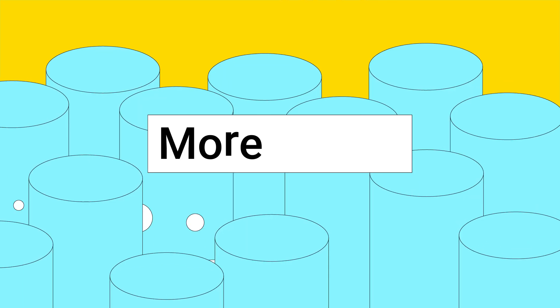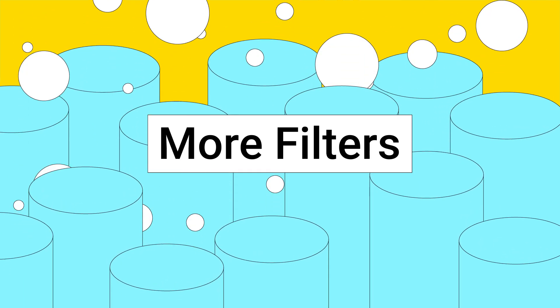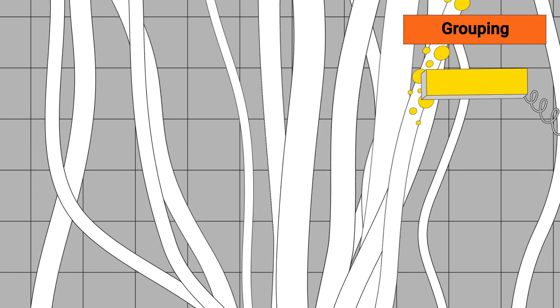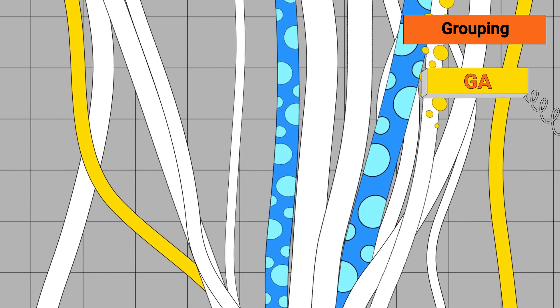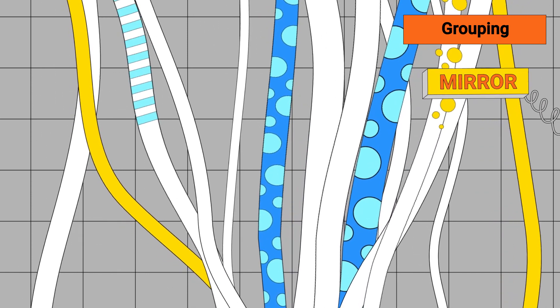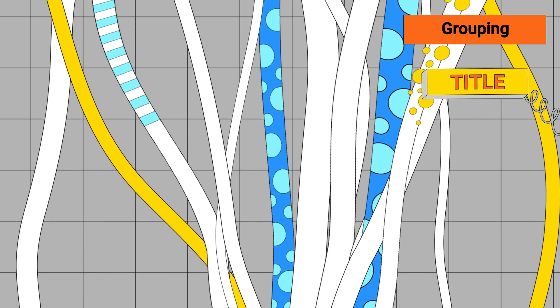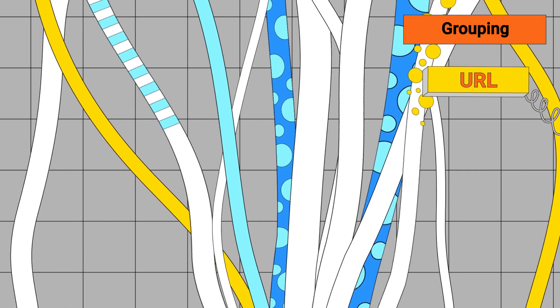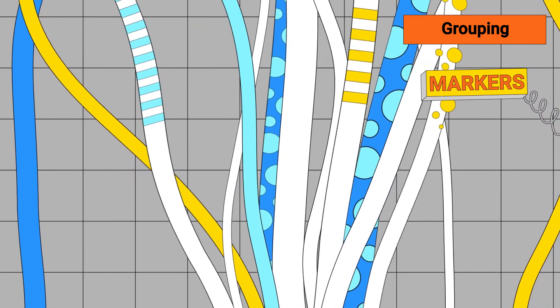Let's apply a few filters. Analyze the data by blocks, by IP grouping, by GA, by mirror pages, by occurrence of certain phrases in the title, the URL, in anchor text, and by markers.